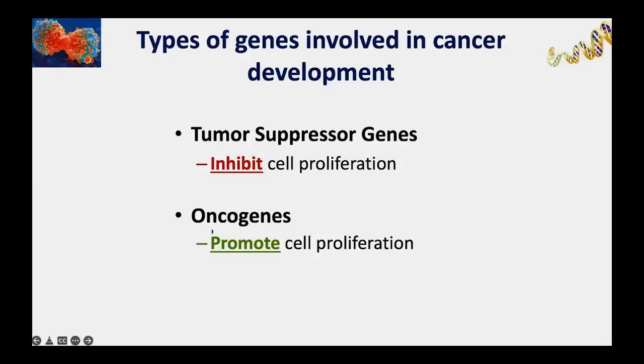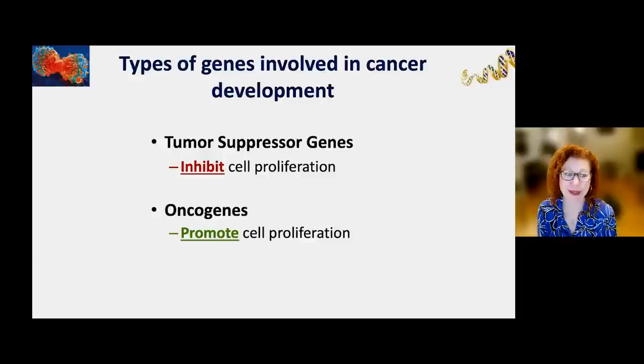The other category is oncogenes—genes that promote cell proliferation. We need cell proliferation for wound healing and many other processes; we just want cells to proliferate at the appropriate time and only as much as needed. So to summarize: tumor suppressor genes inhibit cell proliferation, and oncogenes promote cell proliferation.